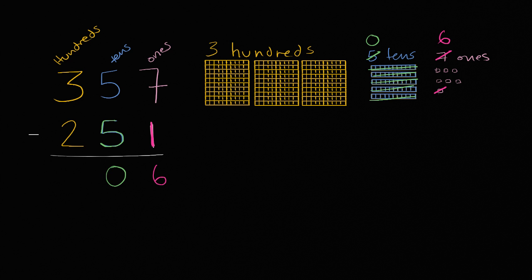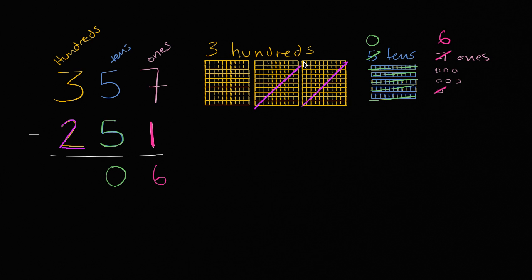And then finally, we started with three hundreds, but we want to take away two of them. So let's take away one hundred and two hundred, and we're just going to be left with this hundred right over here — one hundred.